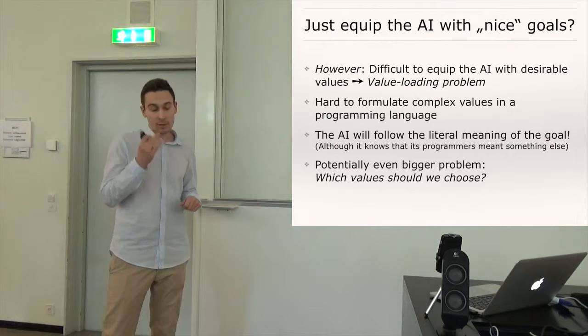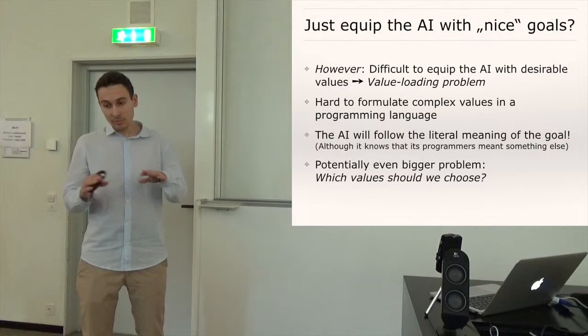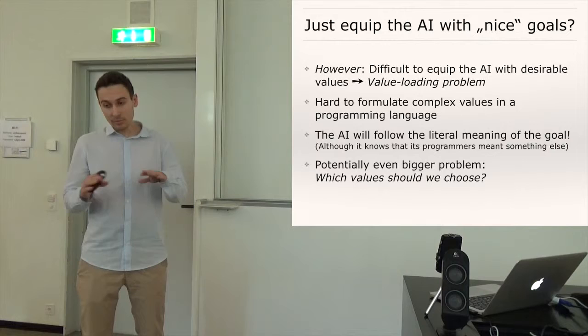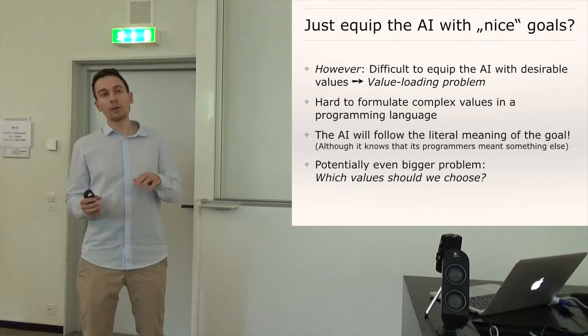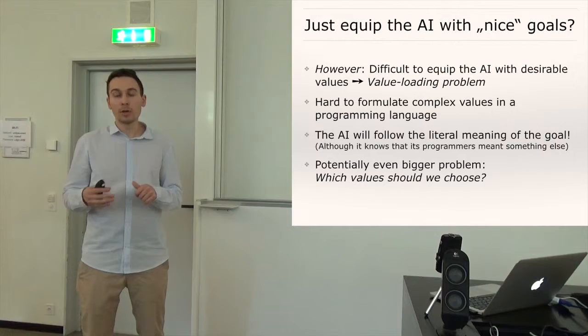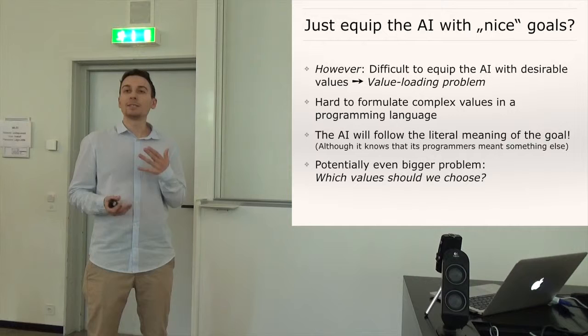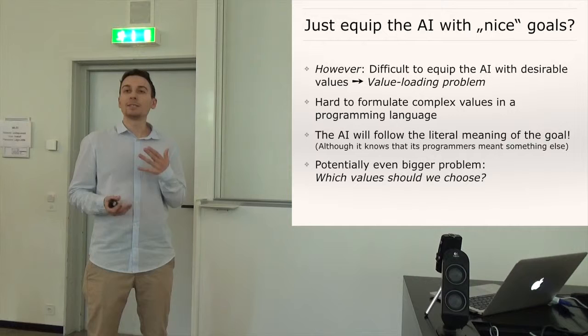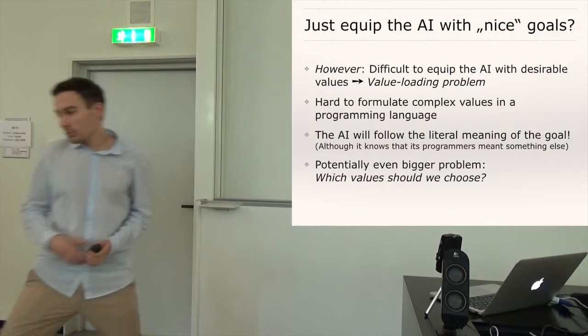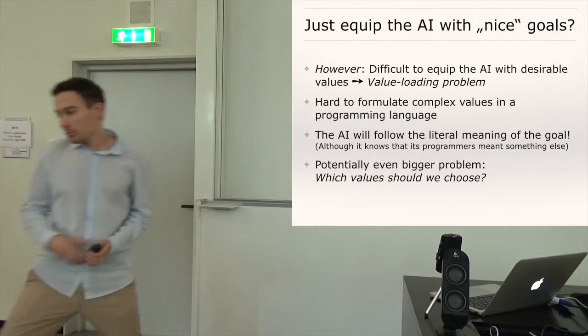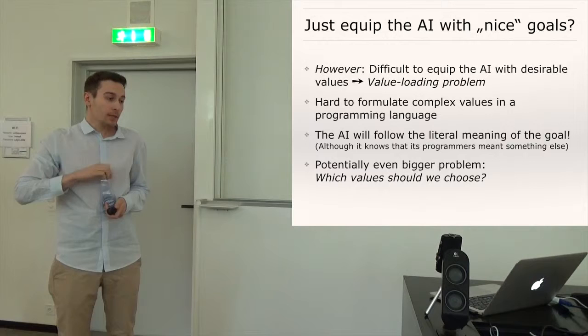And okay even if we assume that we somehow solved the value loading problem there might be a potentially even bigger problem namely which value should we choose? And if you just look at the moral track record of humanity at best this doesn't exactly inspire confidence because until very recently almost all humans basically were racist and sexist and nationalistic. And so it might be the case even if you think you yourself are enlightened you know anti-speciesist and non-sexist and non-racist they might be still something that we miss and that future generations might look back on our behavior and think these were really cruel people.